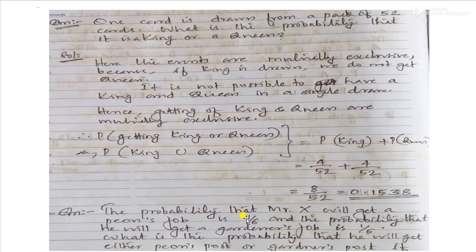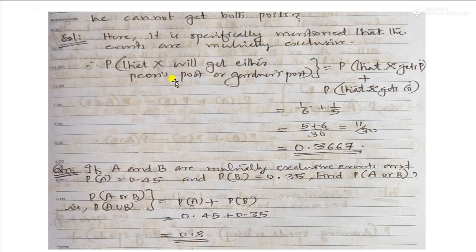The probability that Mr. X will get a peon's job is 1 by 6, and the probability that he will get a gardener's job is 1 by 5. What is the probability that he will get either a peon's post or a gardener's post, if he cannot get both posts? The answer is 1 by 6 plus 1 by 5, which equals 11 by 30, or 0.3667.